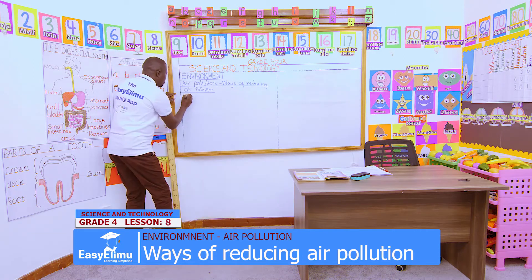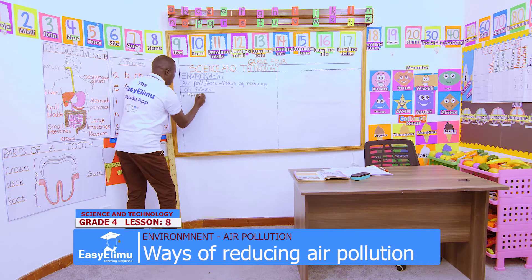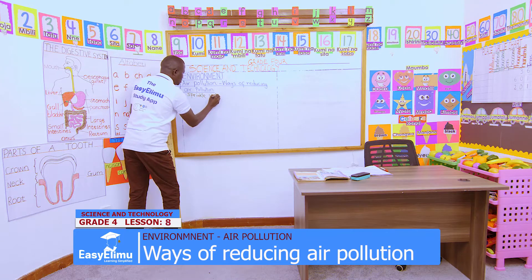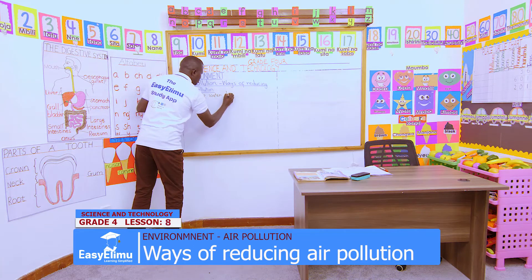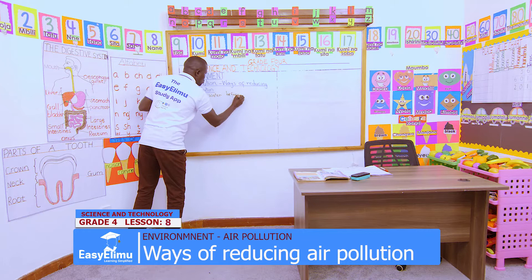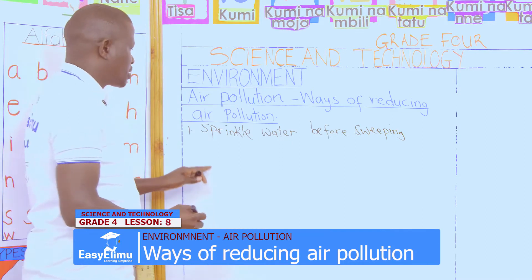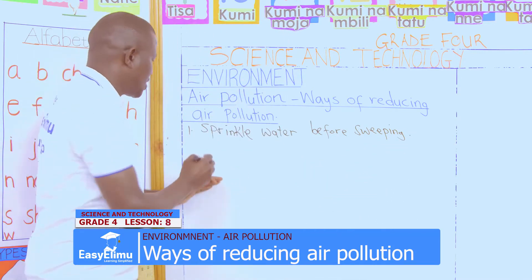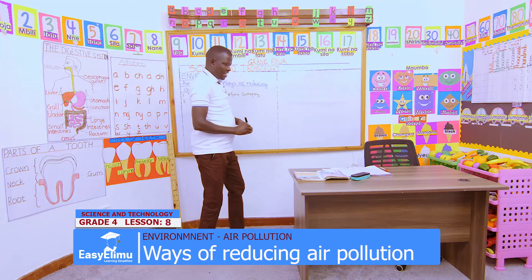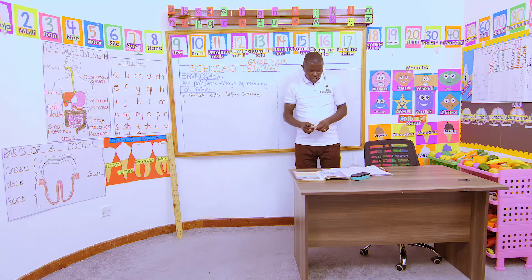You sprinkle water on dusty places before sweeping. That is correct. Way number one of reducing air pollution is sprinkling water before sweeping. If you want to sweep and the place is bare, sprinkle water to reduce dust particles.